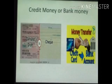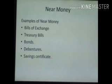Next we see about credit money or bank money. The emergence of credit money took place almost side by side with that of paper money. People keep a part of their cash as deposits with the banks, which they can withdraw at their convenience through cheques. The cheque is known as credit money or bank money. It is not money itself but it performs the same function as money.